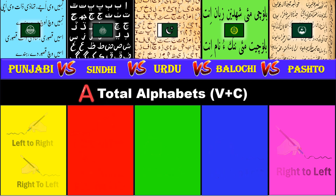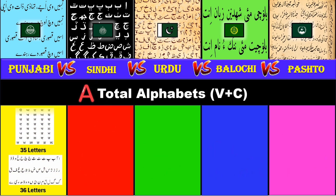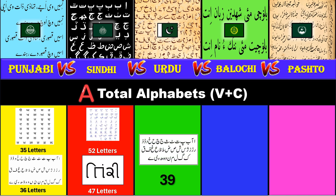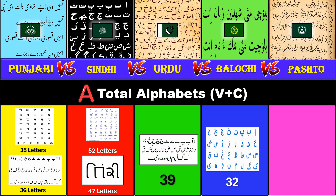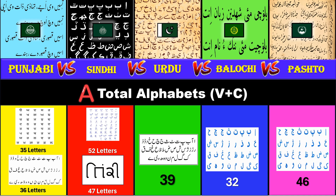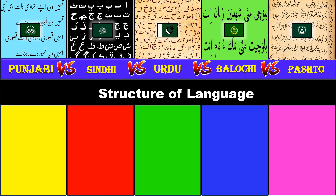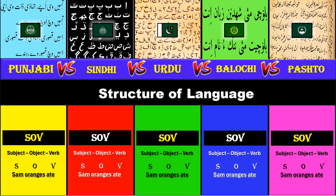Total alphabet. Punjabi: 35 and 36 letters. Sindhi: 52 and 47 letters. Urdu: 39 letters. Balochi: 32 letters. Pashto: 46 letters. Structure of language: all five languages have an SOV structure.